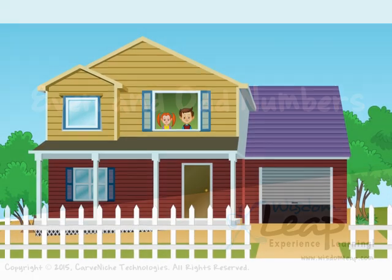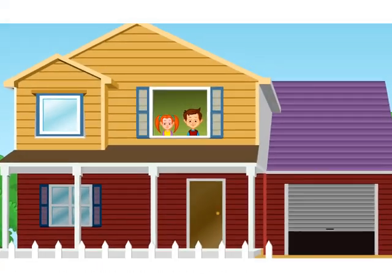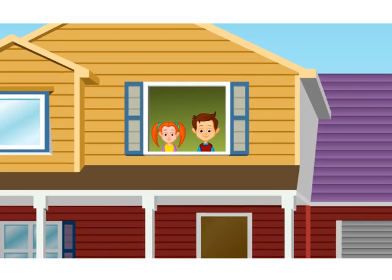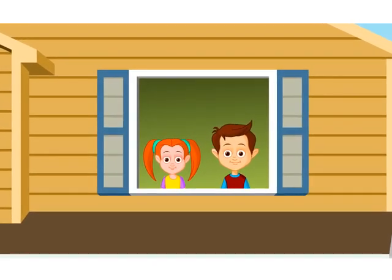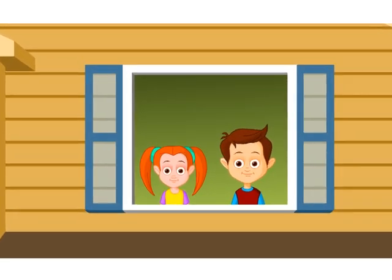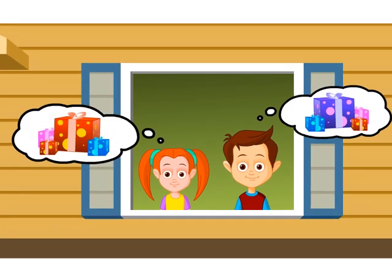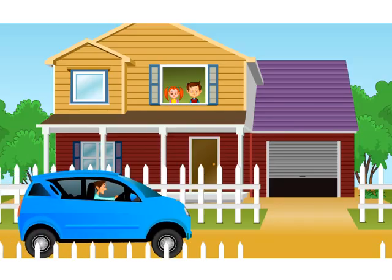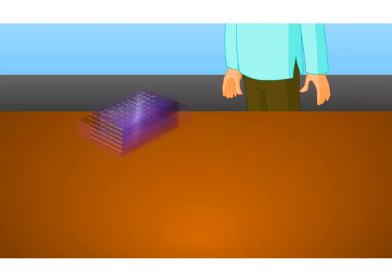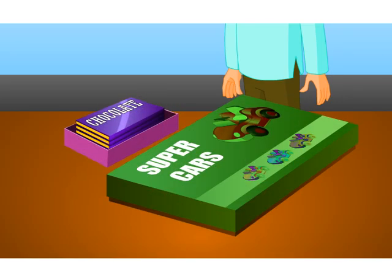Jack and Tina are eagerly waiting for their father. He is coming back from a trip to Mumbai and has promised to bring gifts for both of them. Here comes their father, and he has brought them chocolates and cars. Their parents asked them to share the chocolates and cars equally.